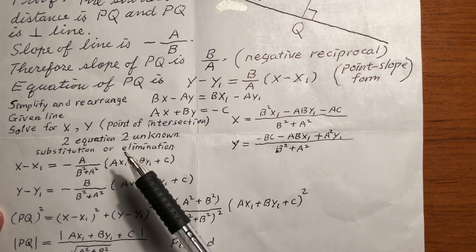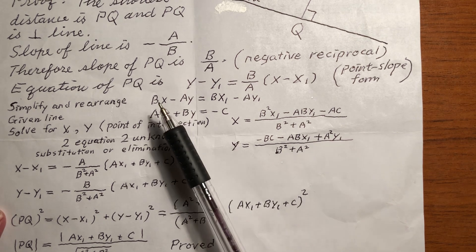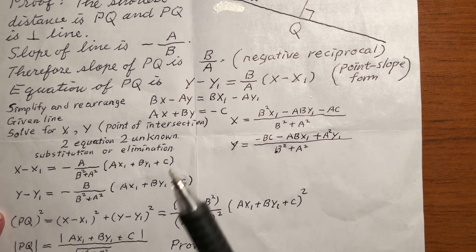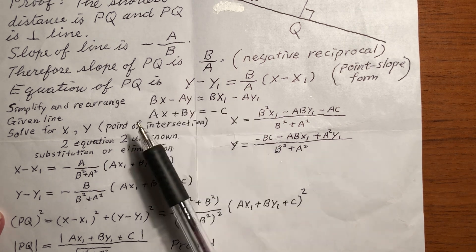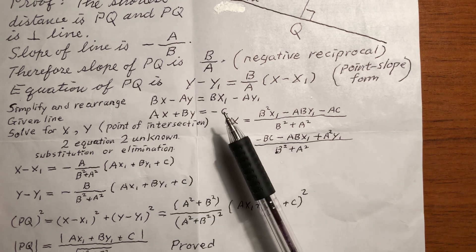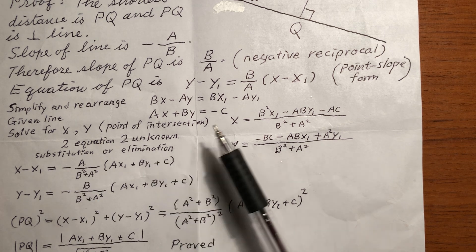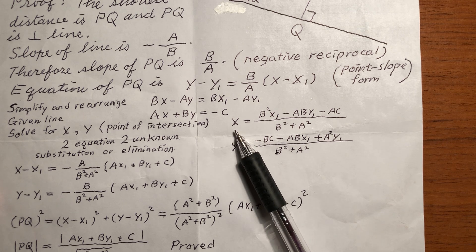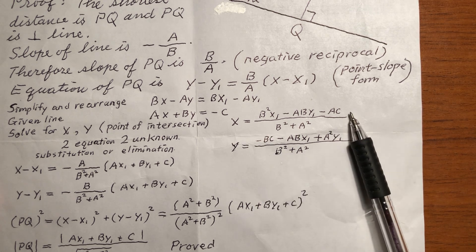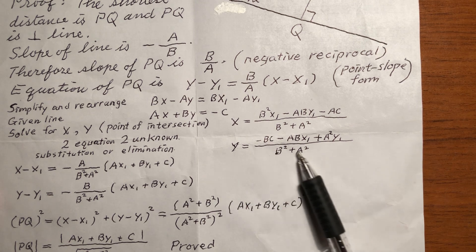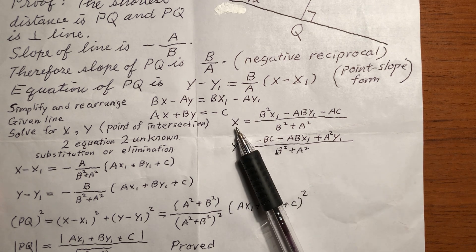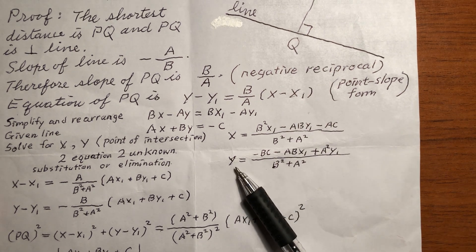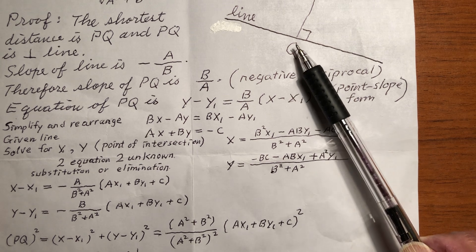I'm not going to give you the detail because this is quite routine — this is called systems of equations. Using either substitution or elimination, I just put down the results: x is this value, which is the x-coordinate of point Q, and y is this value, which is the y-coordinate of point Q.